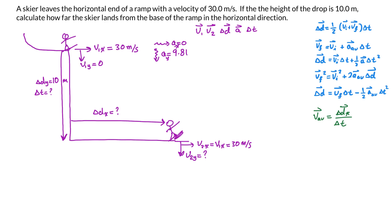Let's check what information we have for each direction. In the x direction I have the average velocity but I'm missing delta t and delta dx, so I can't solve the x direction yet. I need to move to the y direction to find delta t first. In the y direction I have v1y, delta dy, and acceleration — that's three pieces of information, which means I can find the other two unknowns, including delta t.